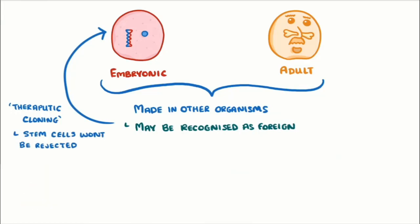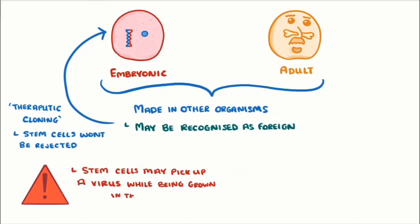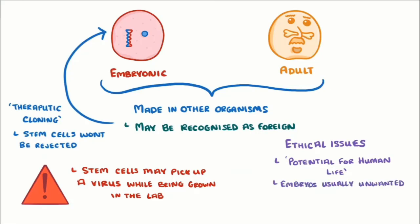There are risks involved — for example, a small risk that stem cells could pick up a virus while being grown in the laboratory and be transported into the patient, causing further disease. There are also ethical issues with stem cell research. Some people object because they feel that human embryos used have the potential for human life. However, the embryos used are generally unwanted ones from fertility clinics that would otherwise be destroyed. Many countries tightly control or ban stem cell research; in the UK it is legal as long as strict criteria are followed.